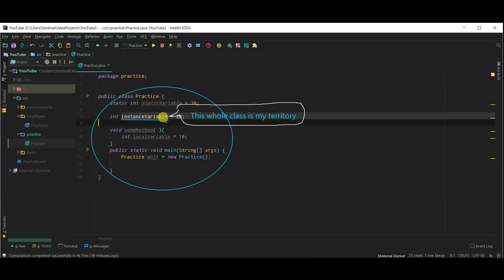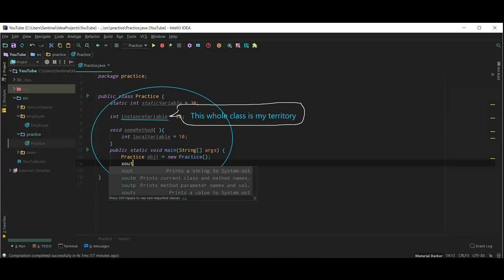Now, for instance variable, this whole class is instance variable territory. Any method or constructor can access this variable. Ok, for example, let's print this variable inside main by using object of this class.